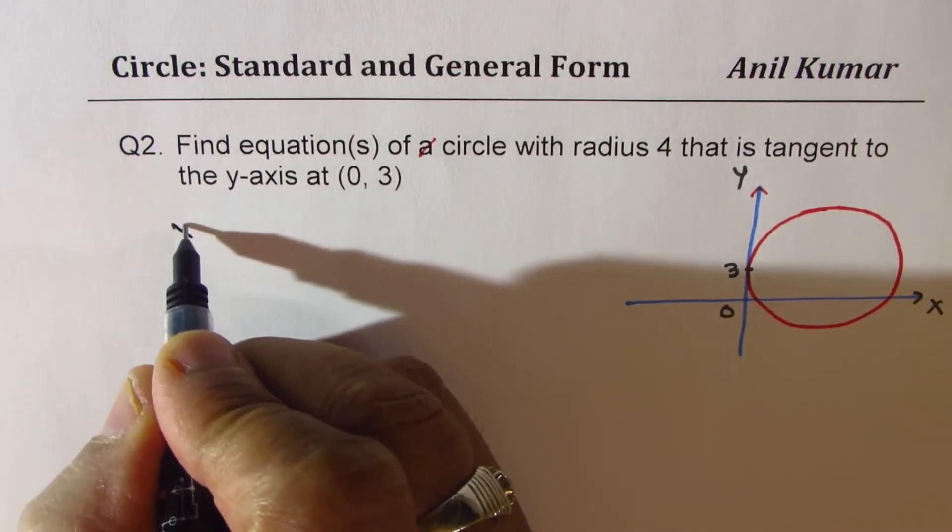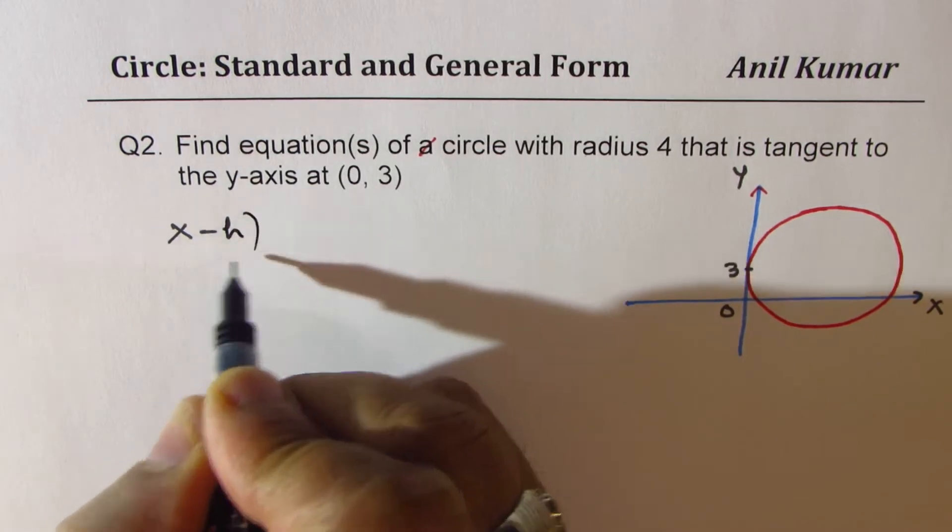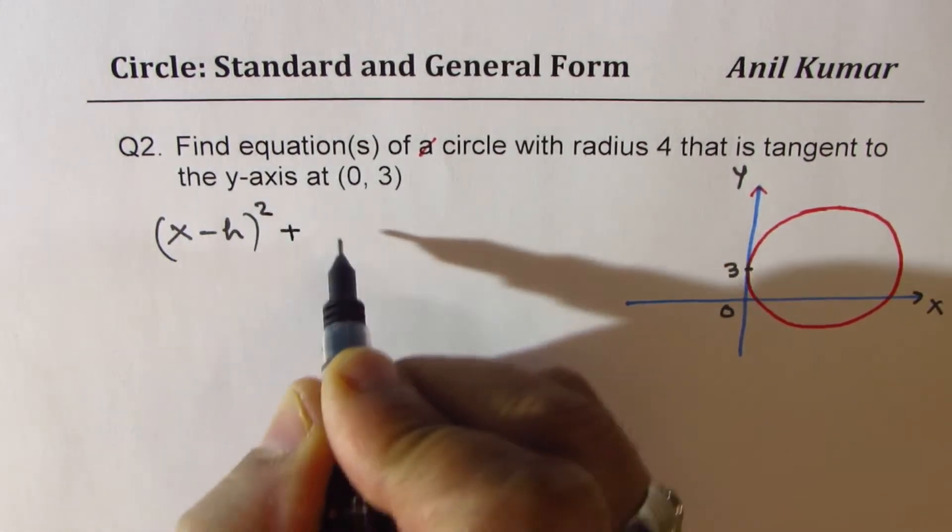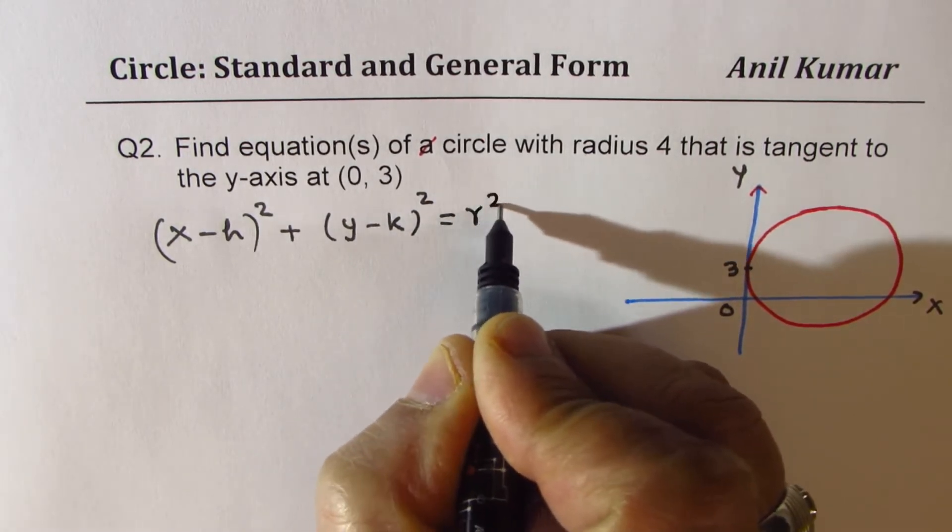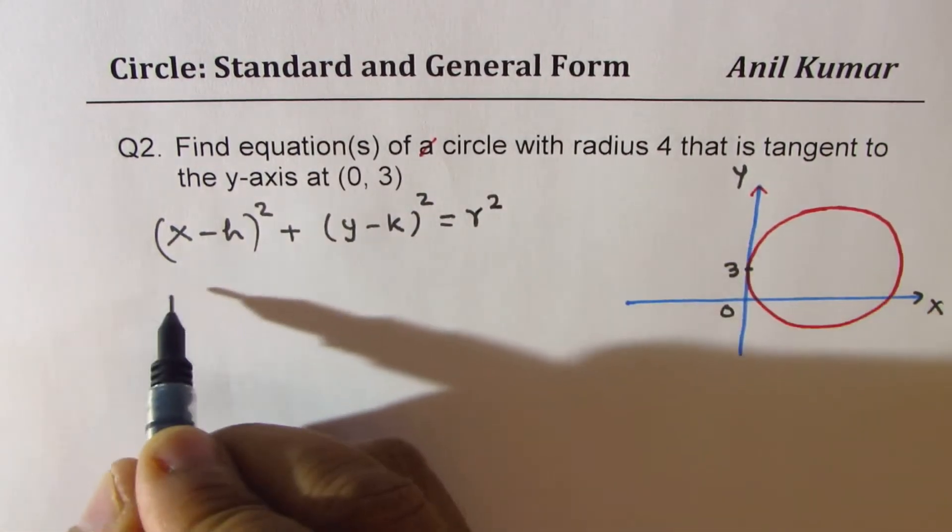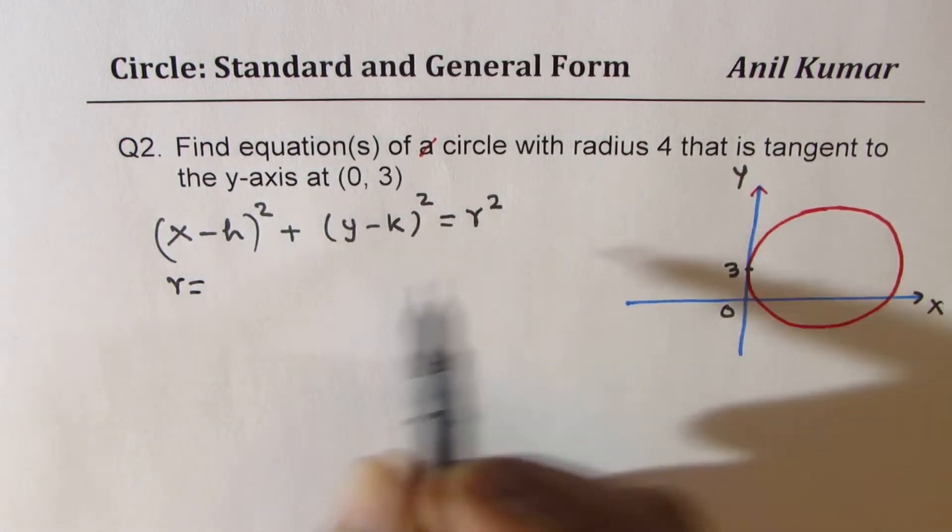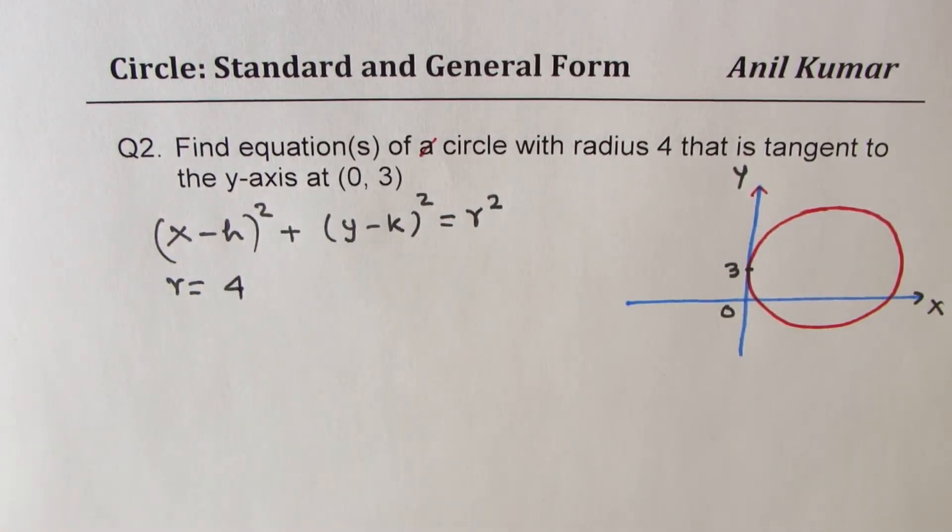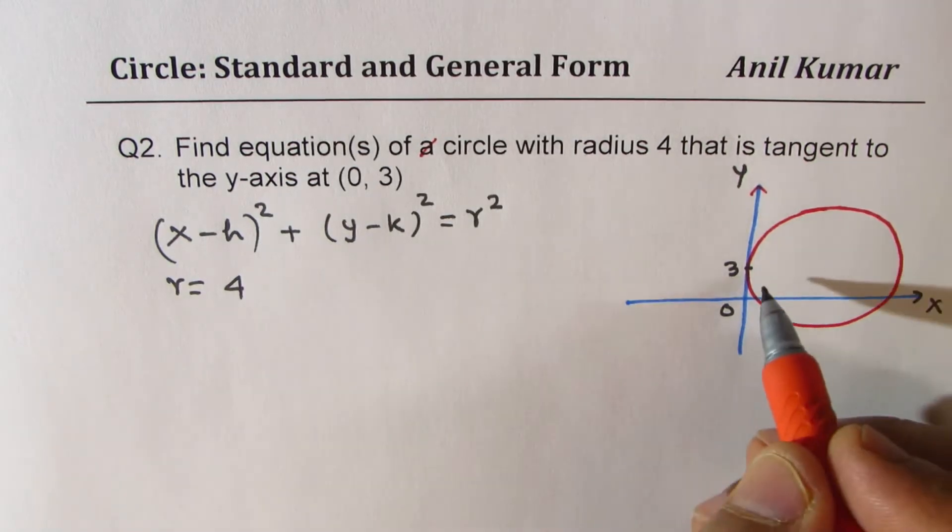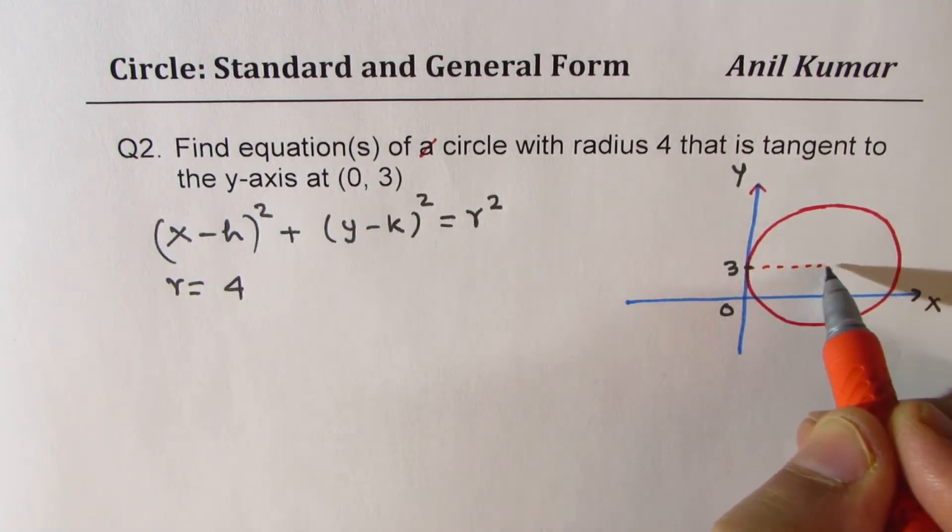Let us say this is the circle. Now it is given to us that this point here is at 3 on the y-axis - (0, 3). And we also know that the radius is 4. We need to give equation of the tangent. Now in standard form, I could write the equation as (x - h)² + (y - k)² = r². We know the radius is 4, but we need to find h and k. That's the whole idea.